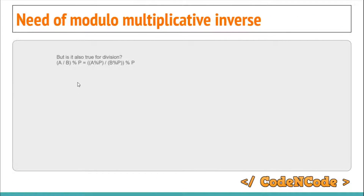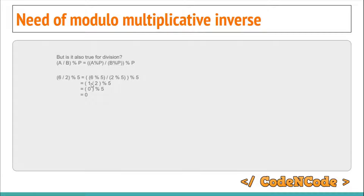To answer that, let's take a simple example. Let's calculate 6 / 2 modulo 5. Now 6 / 2 is 3, and 3 modulo 5 should be 3. But using the formula: 6 modulo 5 is 1, and 2 modulo 5 is 2. In most programming languages, 1 / 2 is 0, so 0 modulo 5 is 0. The result should have been 3, but we are getting 0.